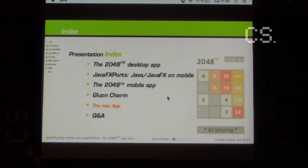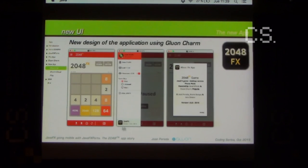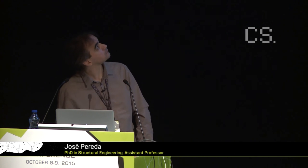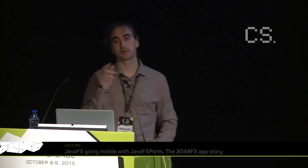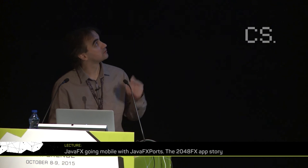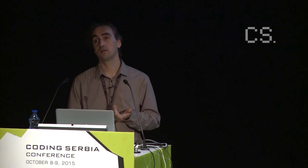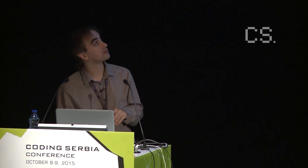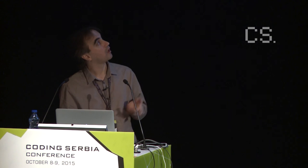Going to finish now with the latest version of our app. Just a few pictures: basically the app will be the same but on top of it we'll have Gluon Charm — so we'll have toolbars with buttons to store or restore the game, quit, and so on. We'll also have a side menu, which is out-of-the-box using Gluon Charm. We have dialogs too — since JavaFX ports doesn't have dialogs from Java 8, we created our own.